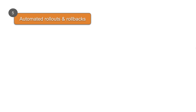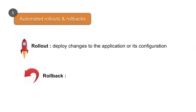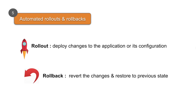Kubernetes can manage rollouts and rollbacks in an automated way. Whenever we make any changes to the application or deploy new changes or new features to our application, that is called a rollout. And if we have to revert those changes and restore the application to the previous state, that is called a rollback.